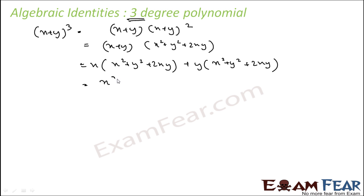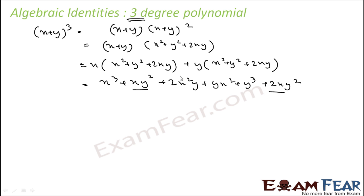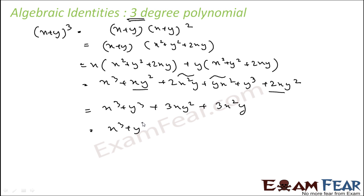It becomes x³ + xy² + 2x²y. This becomes yx² + y³ + 2xy². The xy² terms are common, and the x²y terms are common, so I can write this as x³ + y³ + 3xy² + 3x²y. Here xy is common, so I can write this as 3xy(x + y).